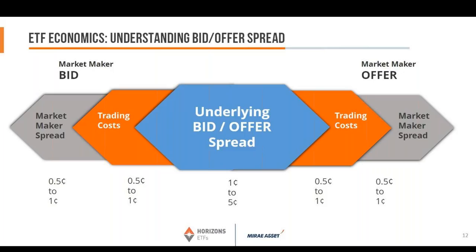That's the bid-offer spread — in this case a 3-cent spread when you add it all up at the lowest possible cost. Fixed income might be more like 9 cents: 1 plus 1 plus 5 plus 1 plus 1. That's why you see different spreads on different ETFs. If you look at two ETFs tracking the same index, like several Canadian ETFs tracking the S&P 500, one of the things that determines cost to you is the unit price. If one unit trades at $50 and another at $10, and both have a 3-cent spread, spending 3 cents on the $50 unit makes better economic sense from a trade cost perspective.